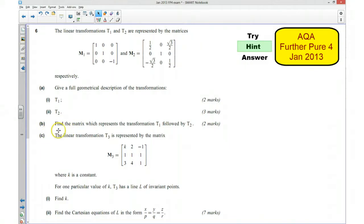Okay, part B says find the matrix which represents the transformation T1 followed by T2, so you need to remember how to multiply these together in order to get T1 followed by T2.